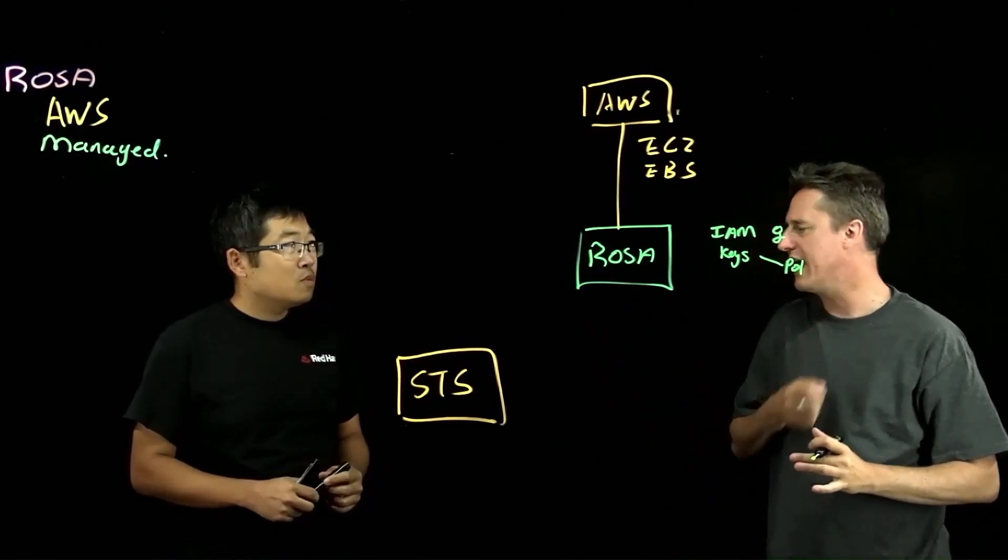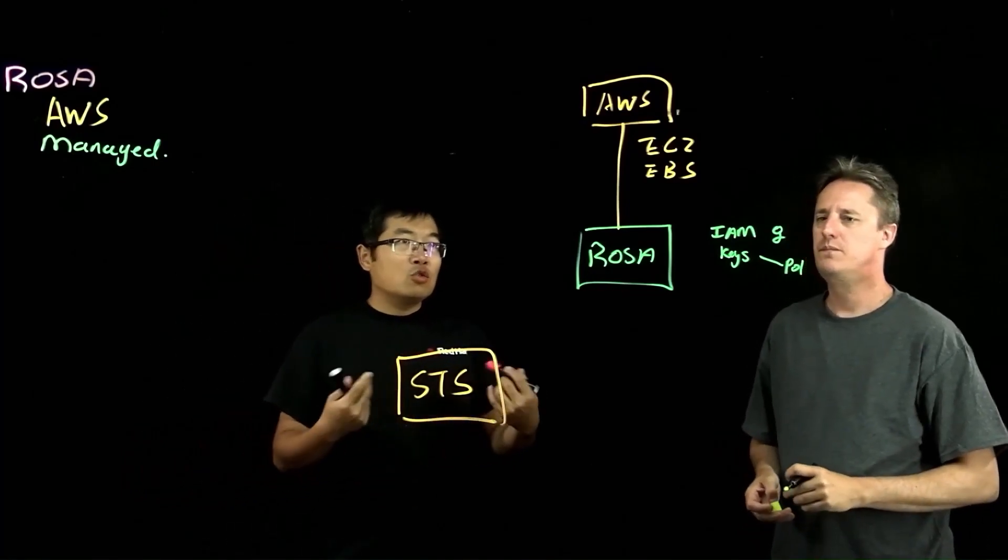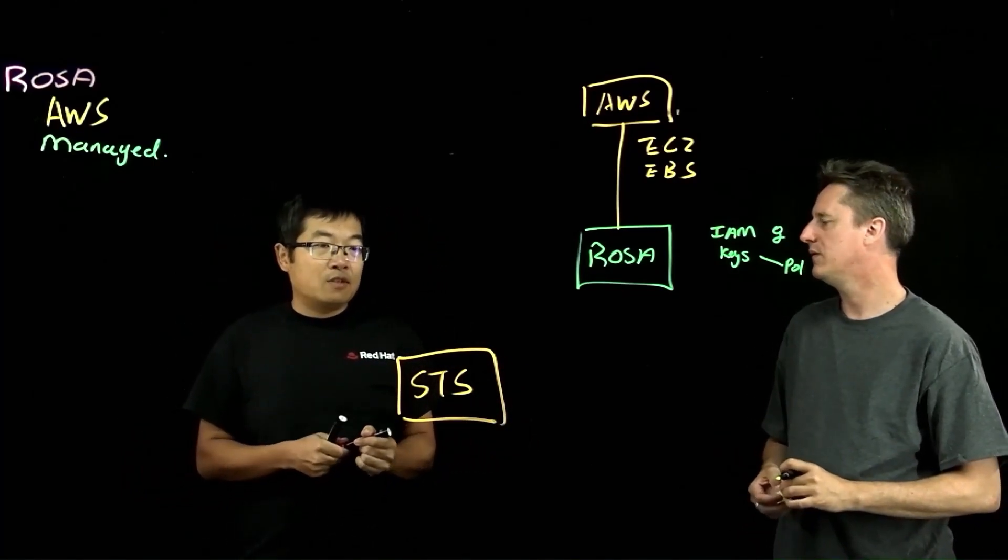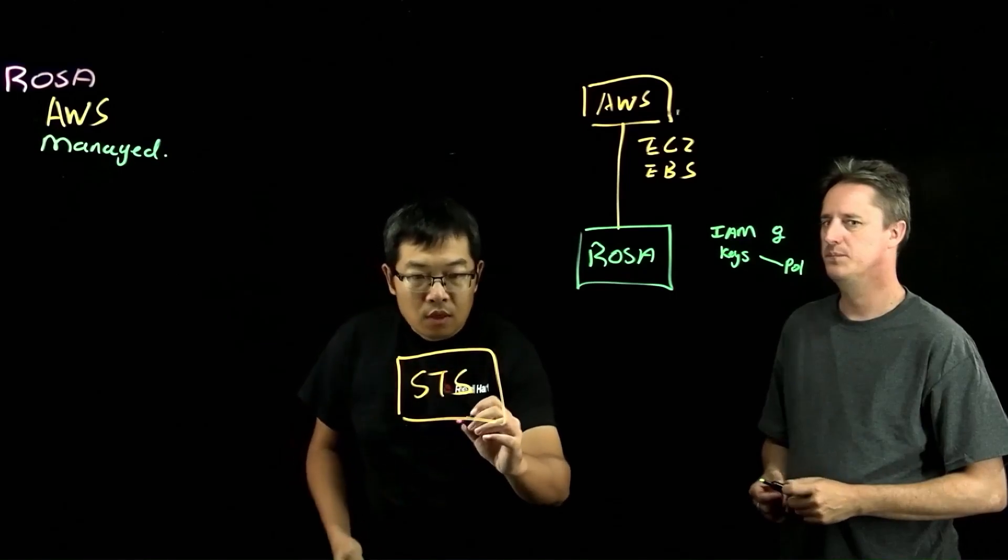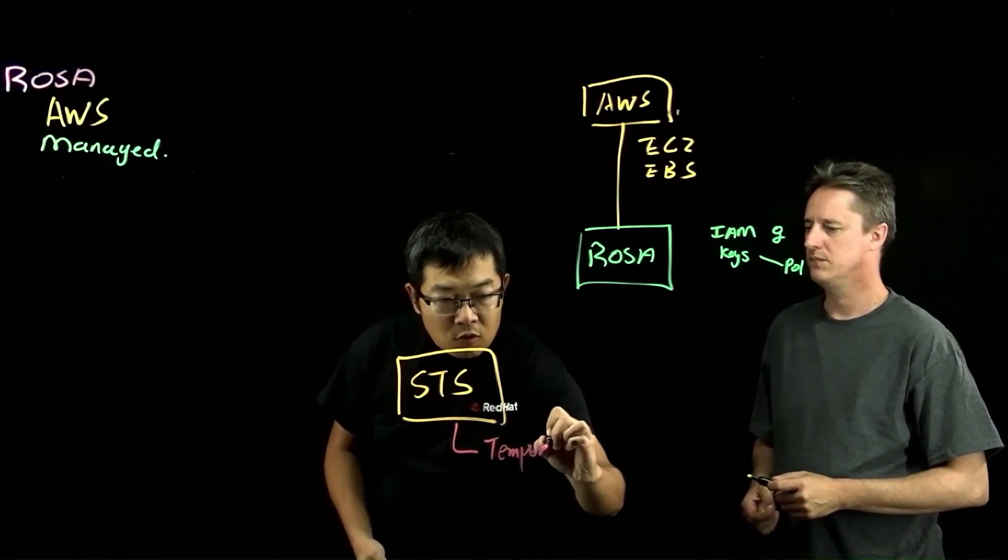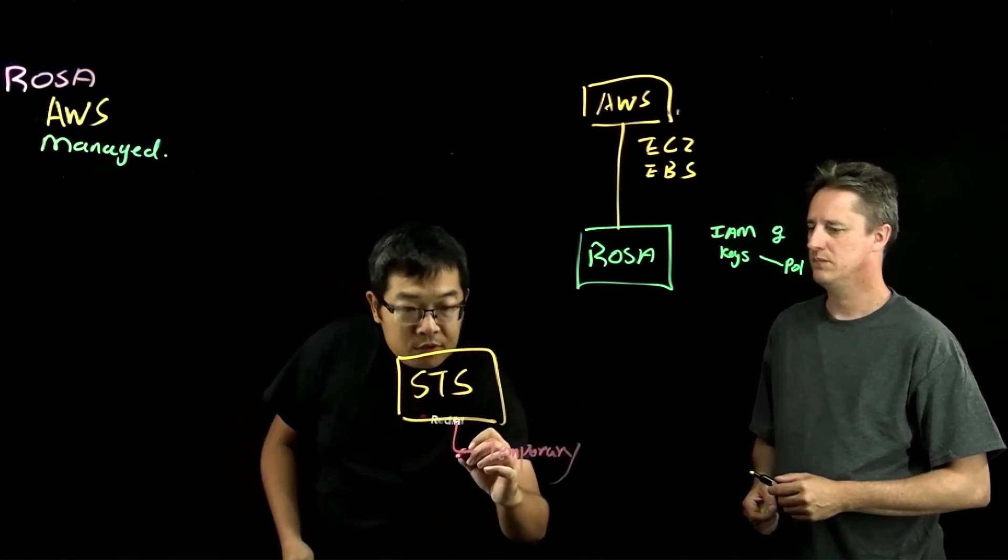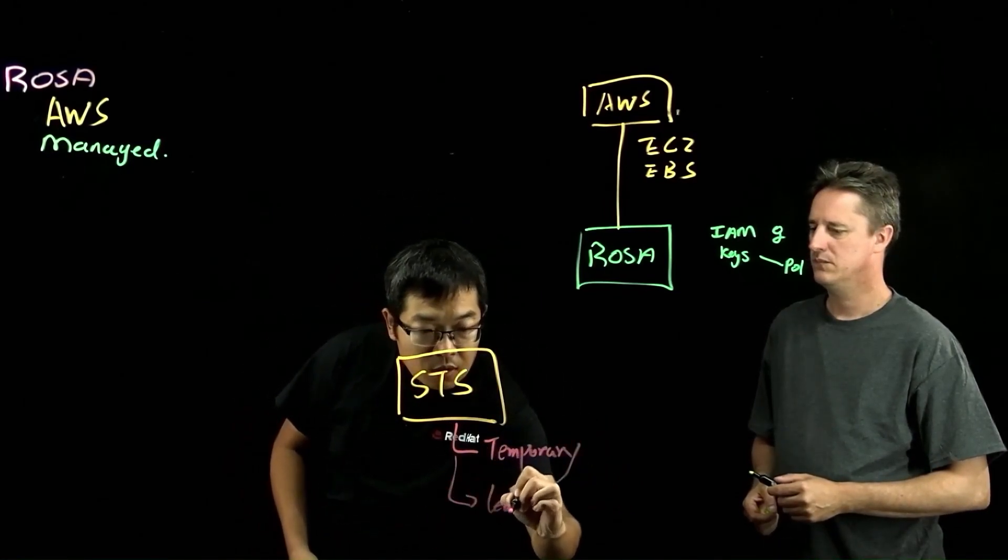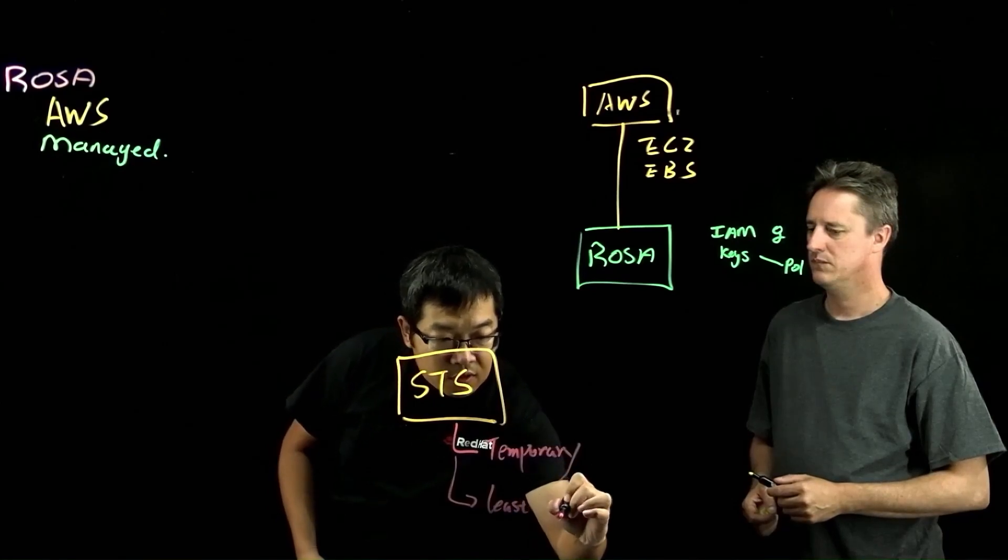How does moving to STS change that? So there are two advantages of using STS. Number one is STS gives you a temporary token. And the other one is it gives you the least privileged token.